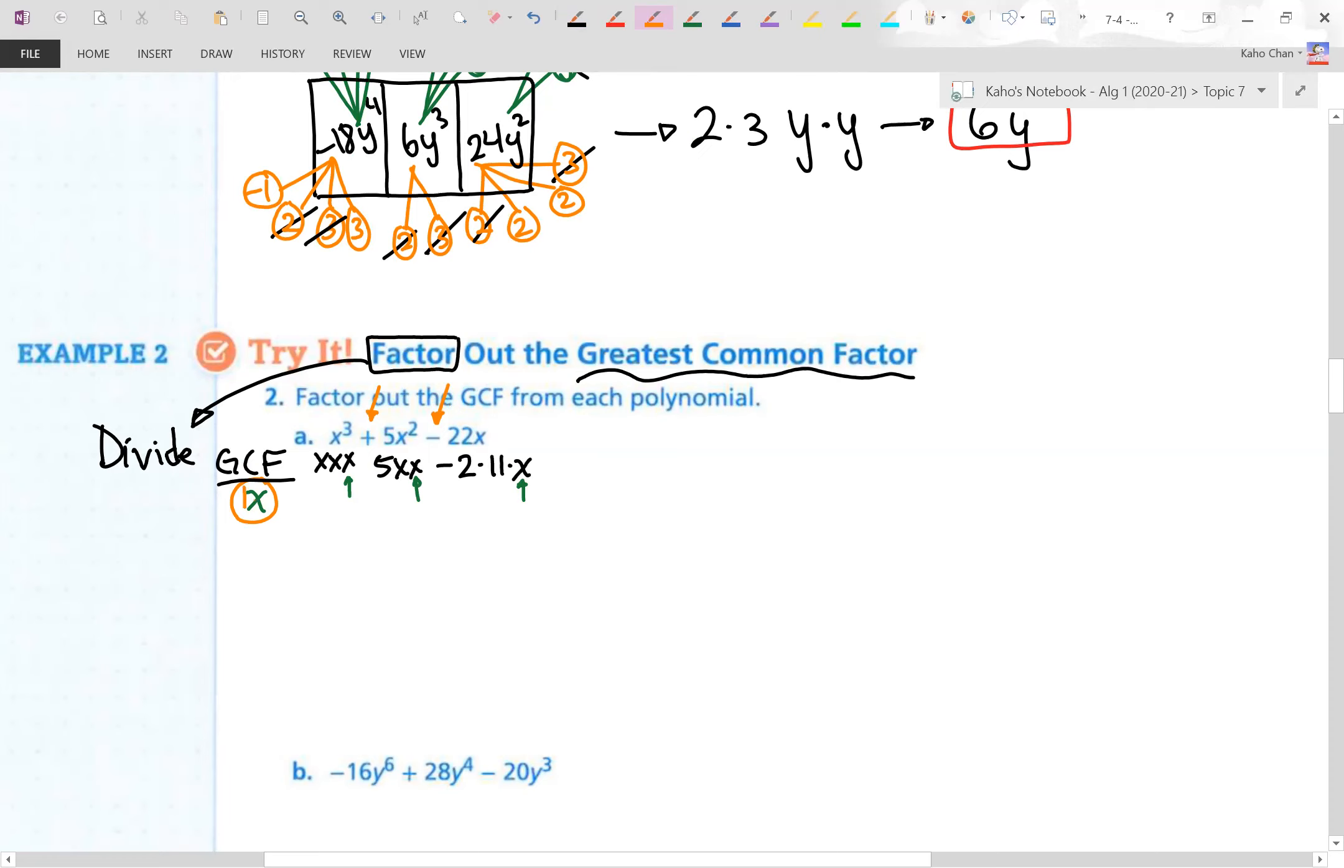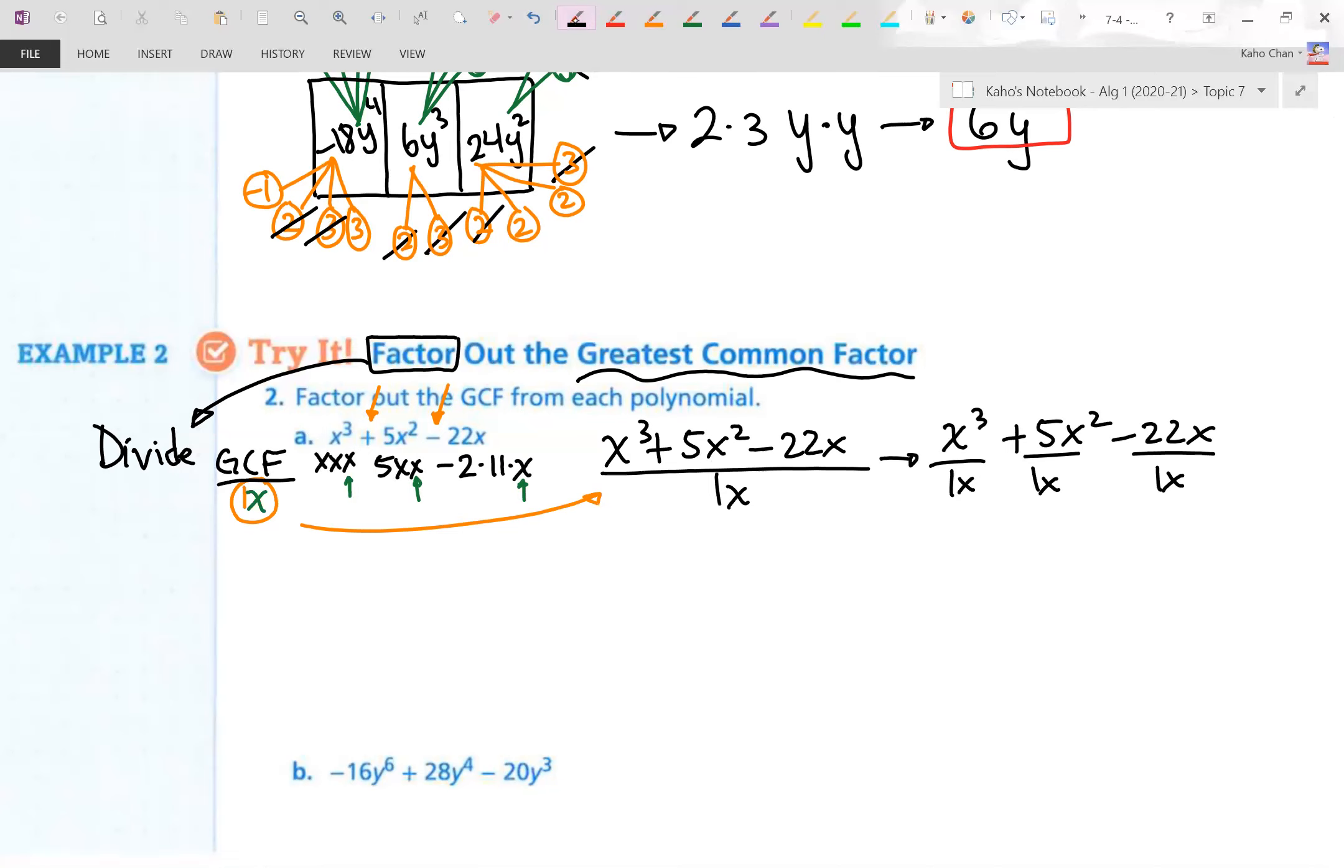So now we are literally going to take my original expression and divide out the GCF. We're going to divide by 1x to all that. When you divide, you split them up and reduce. We divide by 1x to all three terms. And when you reduce that, you'll get the answer. Oh, look! That x cancels with one of those. That x cancels with one of those. And that x cancels with that one right there. Leaving me with x squared plus 5x minus 22.